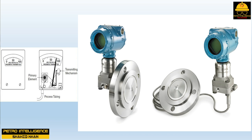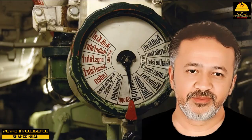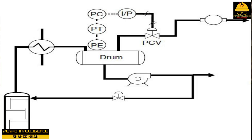A pressure transmitter uses a pressure element to sense pressure and sends a signal to a controller or recorder. Pressure transmitters use all of the primary pressure elements discussed; linkage movement allows the transmitter to send a signal representative of the pressure to a controller or recorder, which then opens or closes control valves. Pressure control loop design has the same elements as temperature, level, and flow control loops; pressure control loops use expansion-type devices as primary elements.